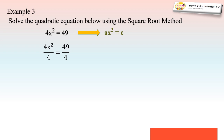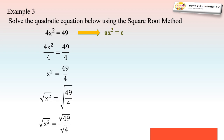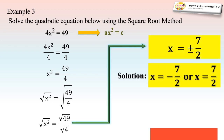For example 3, we have 4x² = 49. The equation is in the form ax² = c. We divide both sides by a = 4, giving x² = 49/4, which is in the form x² = c. We extract the roots of both sides: the square root of x² equals the square root of 49/4. Since 49 and 4 are both perfect squares, we get x = ±7/2.